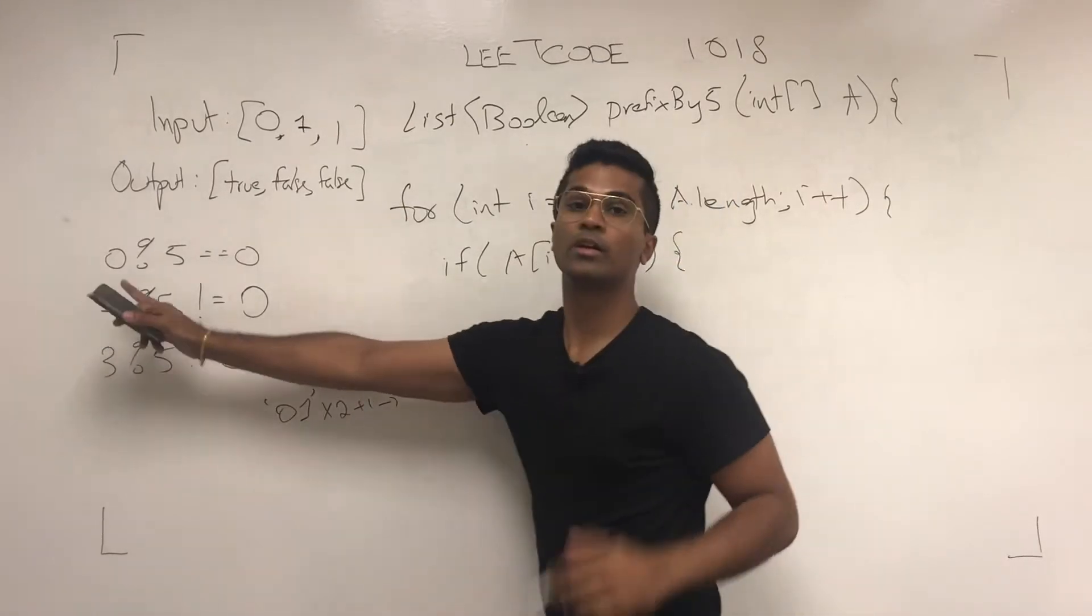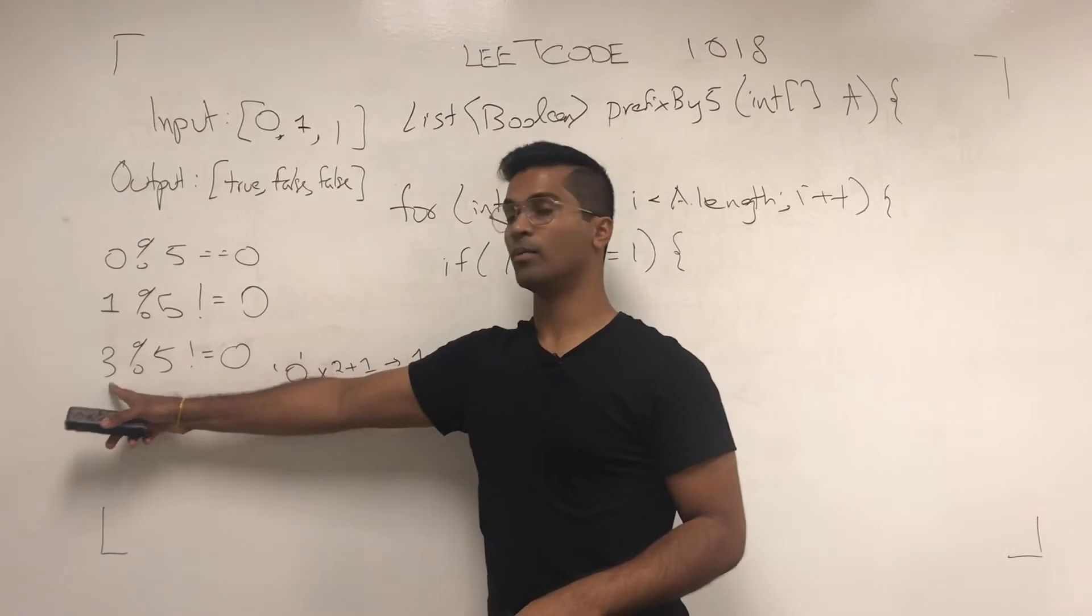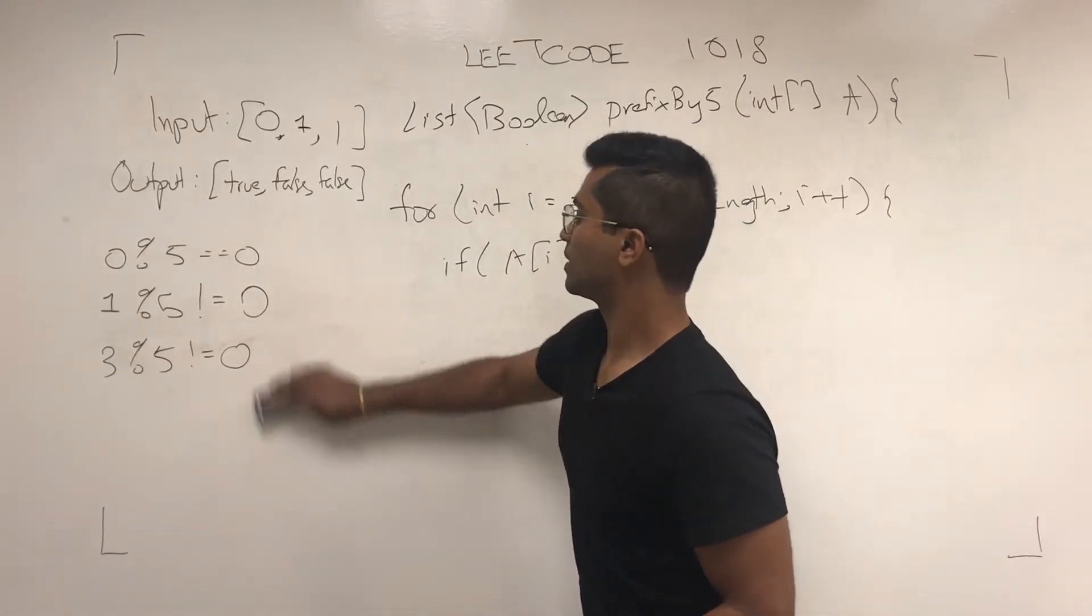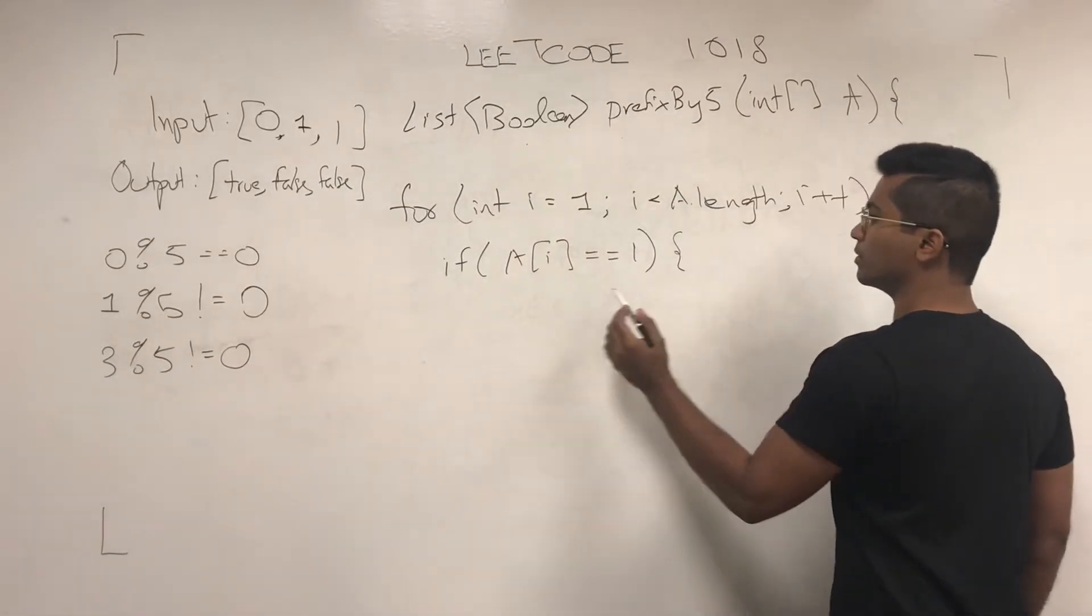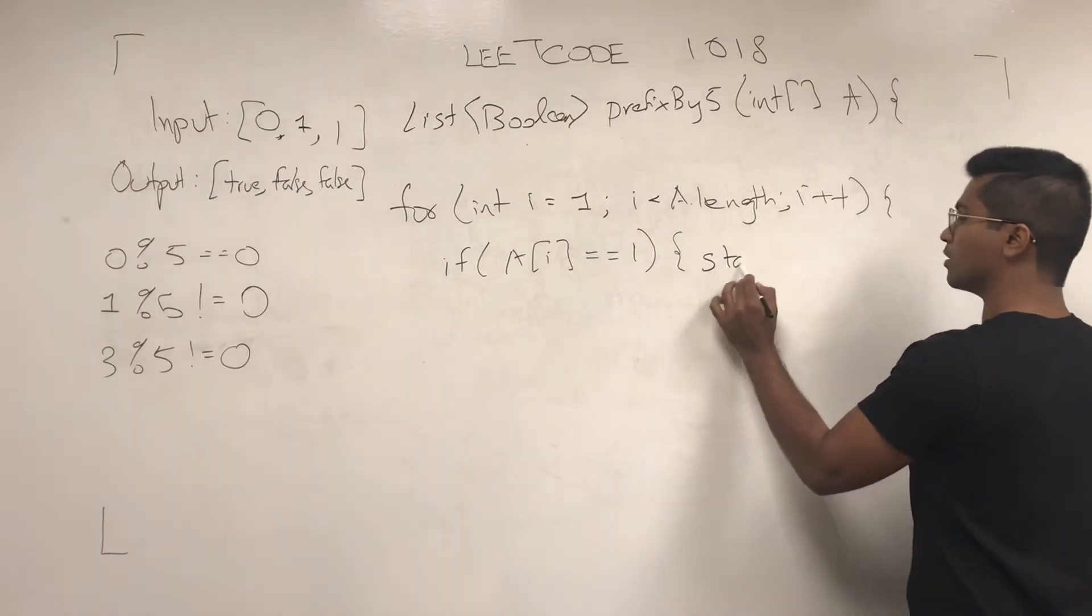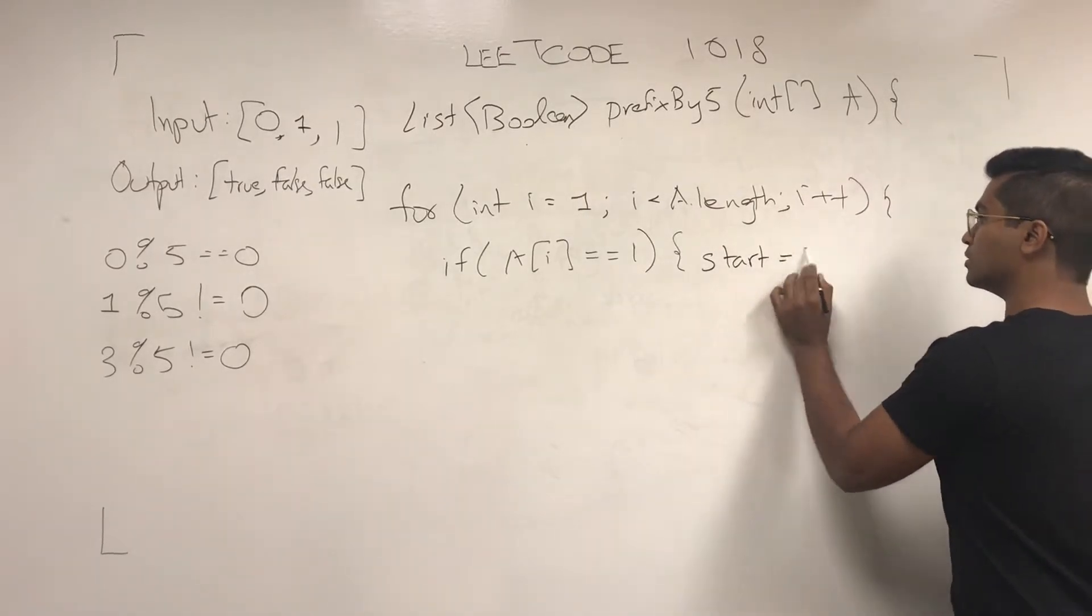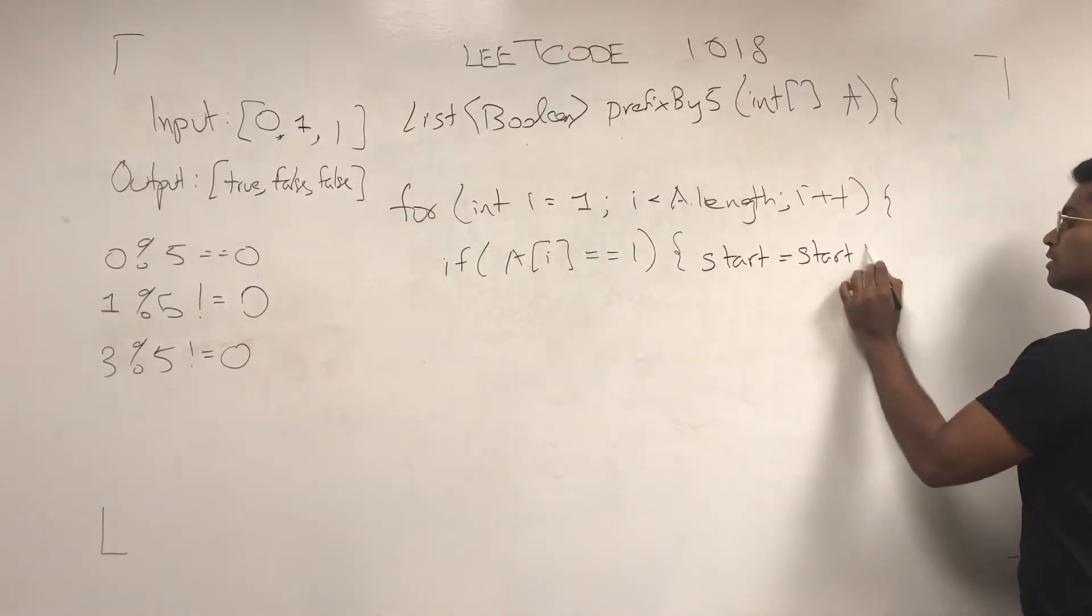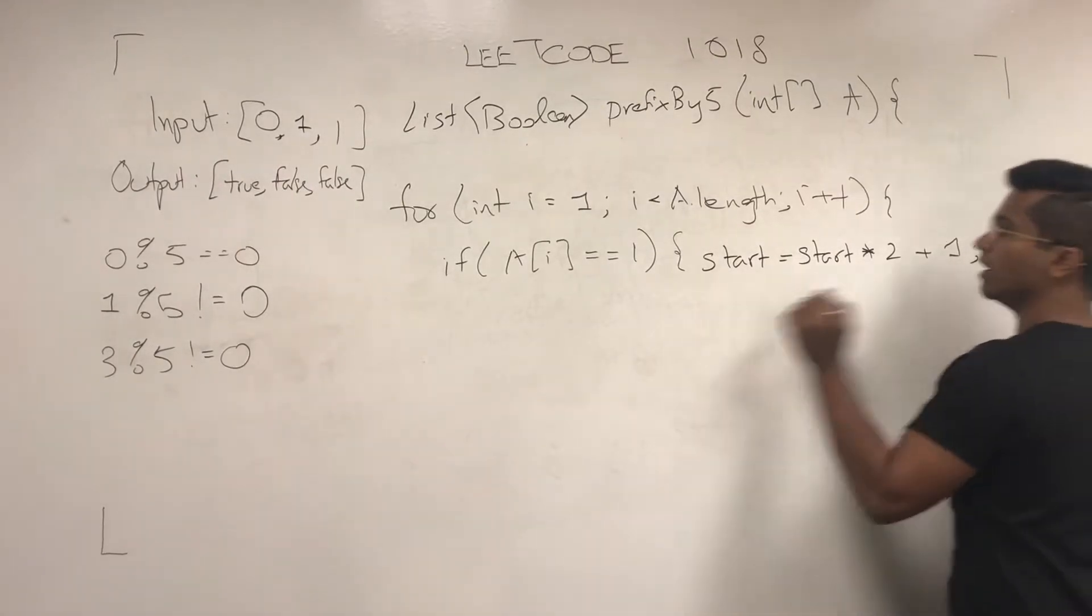So we're pretty much multiplying 1 by 2, which is 2, and then adding 1, which is 3. We do that if that's what it is, and start equals start times 2 plus 1, else.